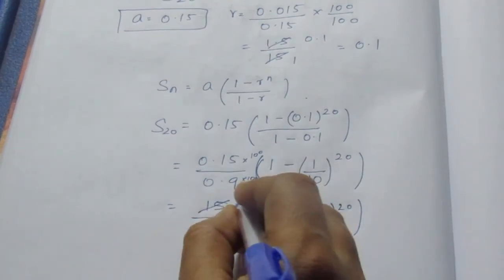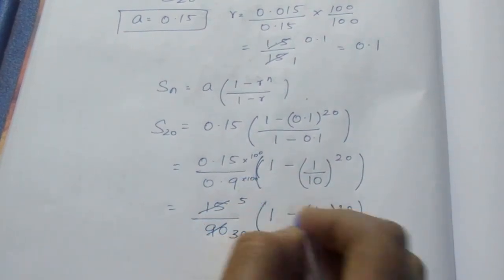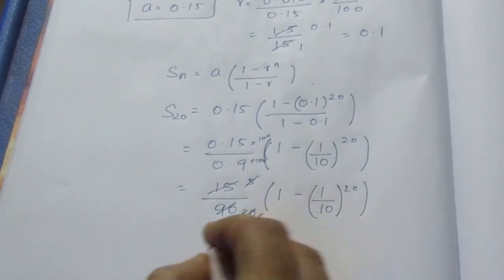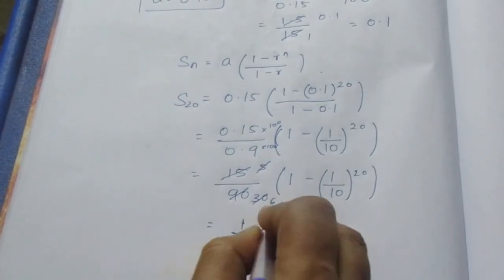Here we can cancel by 3. 3 fives are 15, 3 threes are 9. Again 5 sixes are 30. So it becomes 1 by 6 into